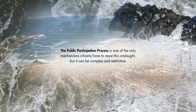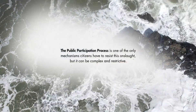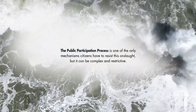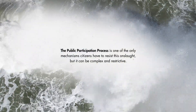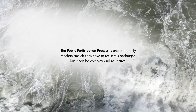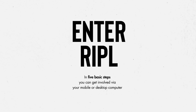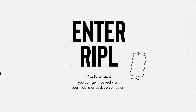The public participation process is one of the only mechanisms citizens have to resist this onslaught, but it can be complex and restrictive. Enter Ripple. In five basic steps you can get involved via your mobile phone or desktop computer.